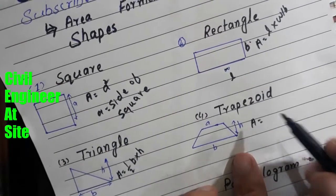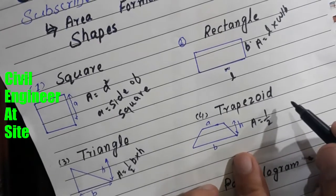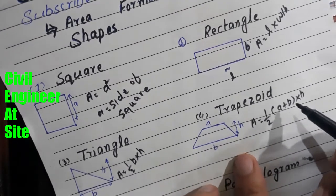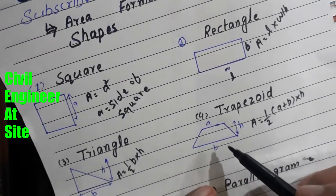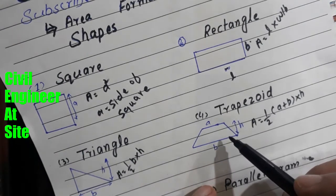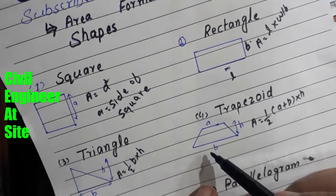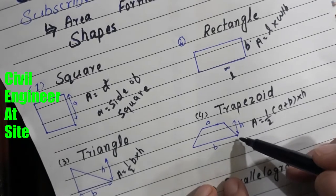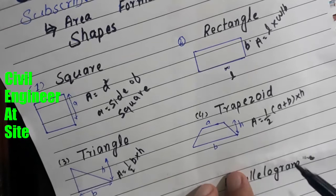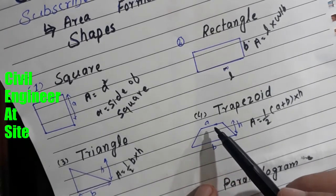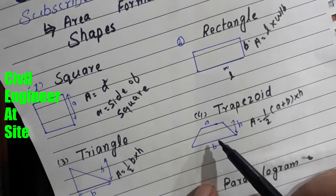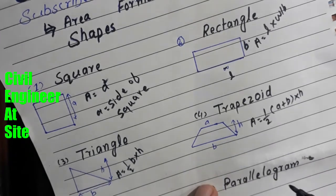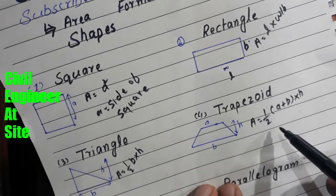The fourth shape is the trapezoid. The formula for the area of a trapezoid is A = ½ × (a + b) × h. In a trapezoid there are four sides and all four sides are not equal. This is the longer length denoted by b, and this is the shorter length denoted by a, and h is the height. When we add a and b, then multiply by height, then divide by two, we get the area: half of (a + b) multiplied by h.